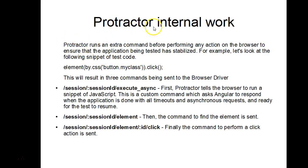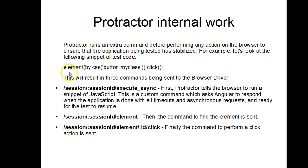Protractor runs an extra command before performing any action — it's a pretty interesting thing. This is done to ensure that the application being tested has stabilized. For example, let's look at the following snippet of code: `element(by.css('button.myClass')).click()`.